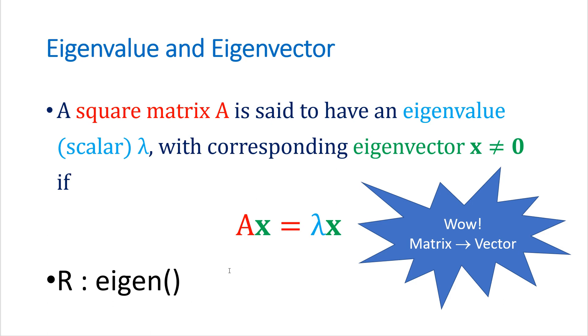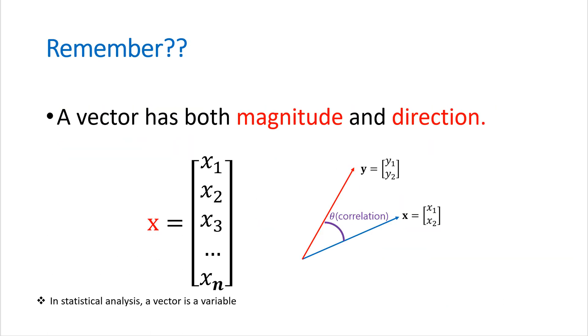We can get eigenvalue and eigenvector in R by using eigenfunction. Again, as I mentioned, a vector has both magnitude and direction.